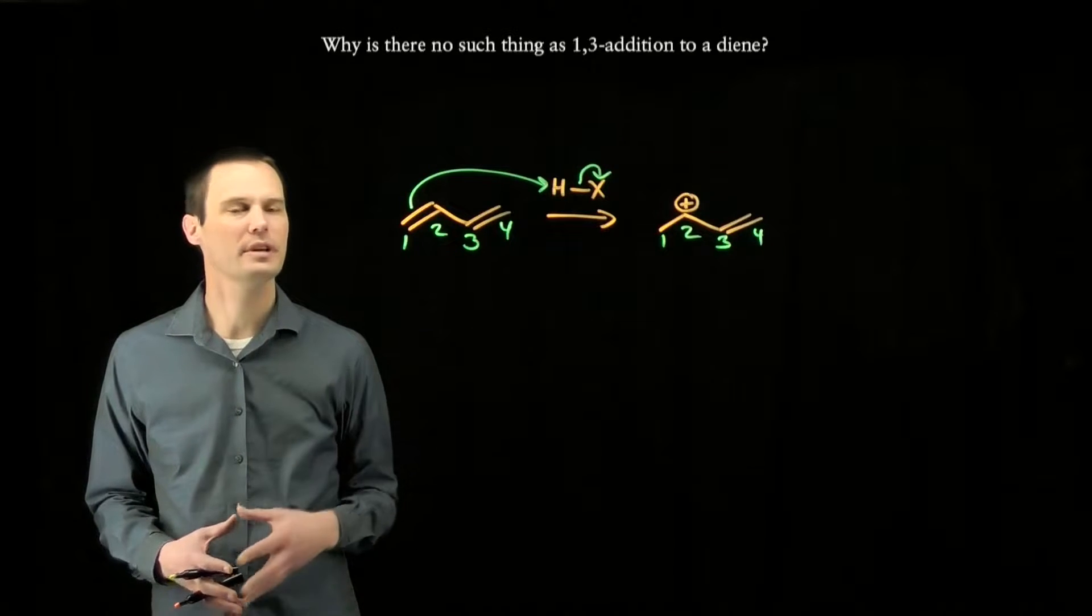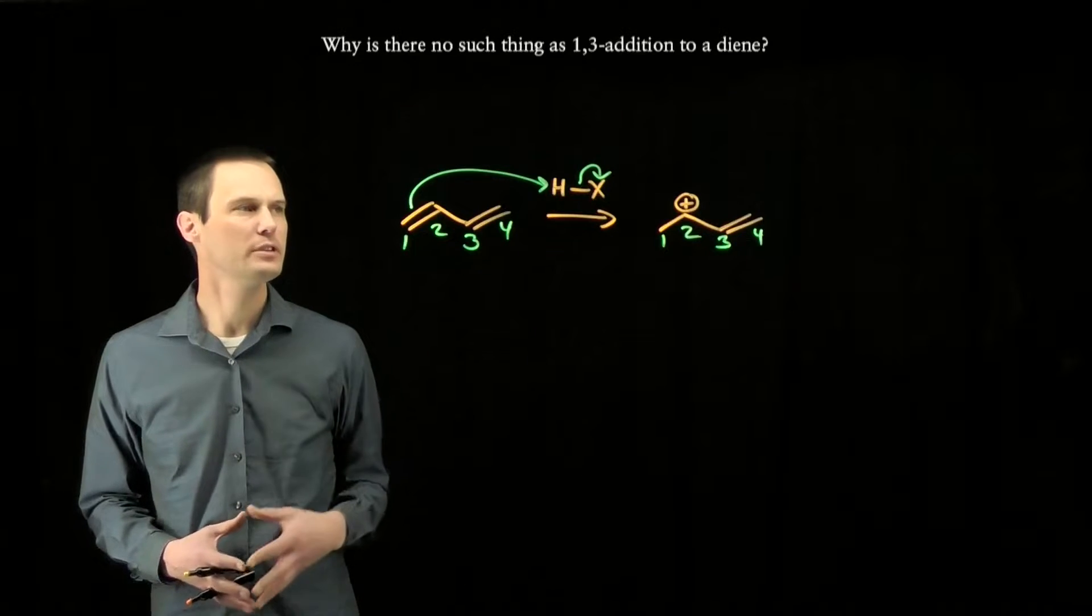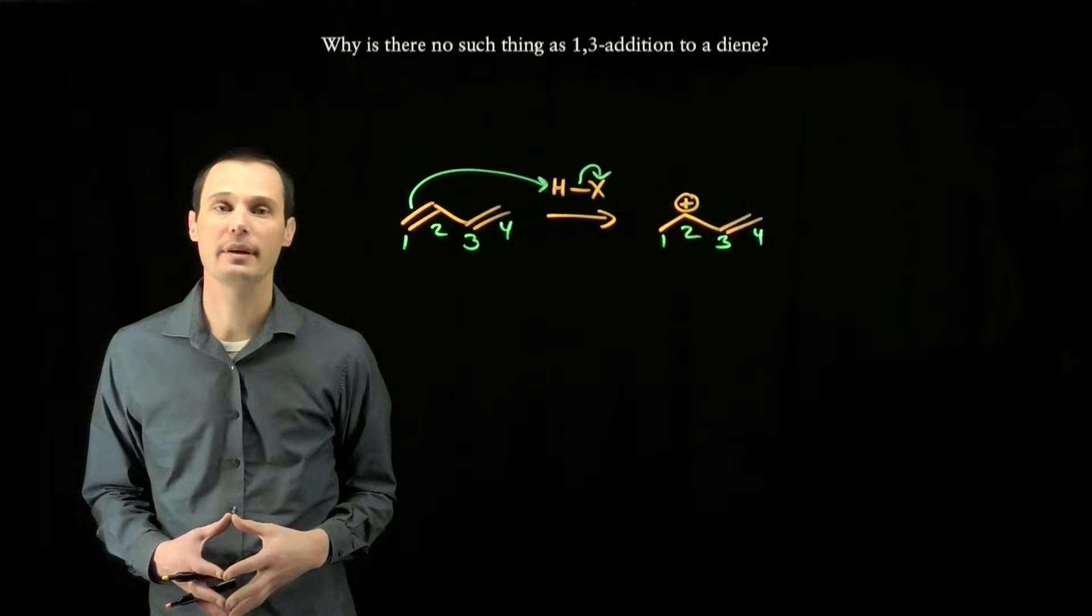This assessment asks us why there's no such thing as 1,3 addition to a diene. If we look at the first step of this reaction, the alkene reacts at carbon number one to form the Markovnikov carbocation.